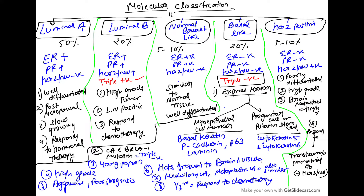Luminal A accounts for 50% of breast cancers. It is a well-differentiated tumor seen in post-menopausal women. It is a slow-growing tumor and responds to hormonal therapy because it is ER/PR positive. These are the four important points.